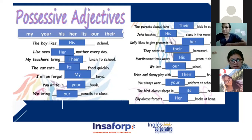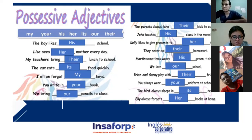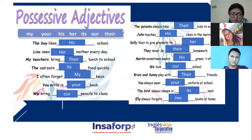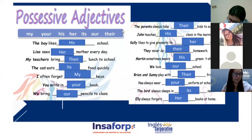'We love our school.' Nosotros amamos nuestra escuela. Number seven: 'Brian and Zumi play with their friends.' Very good. Number eight: 'You always wear your uniform at school.' Number nine: 'The bear always sleeps in its nest.' And number ten — 'Ellie always forgets her books at home.'